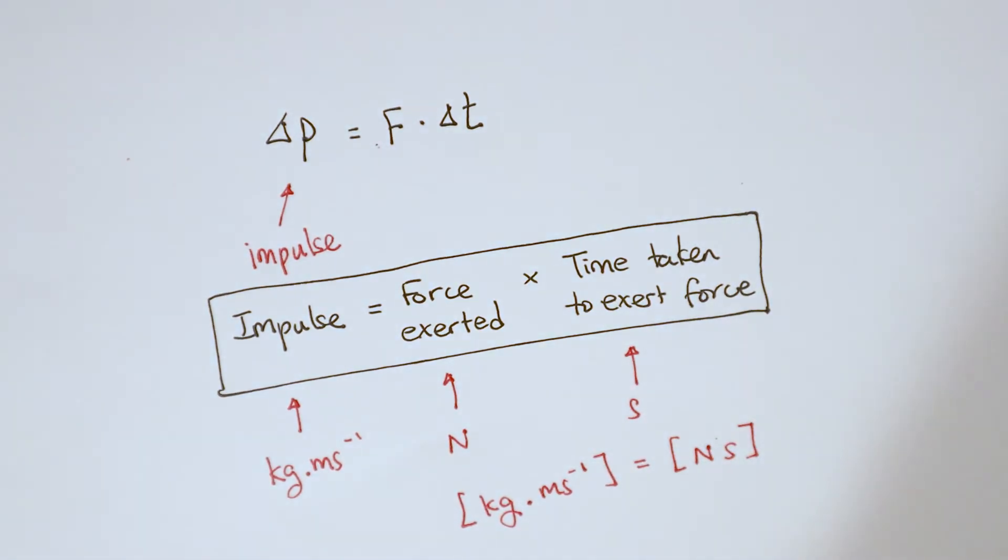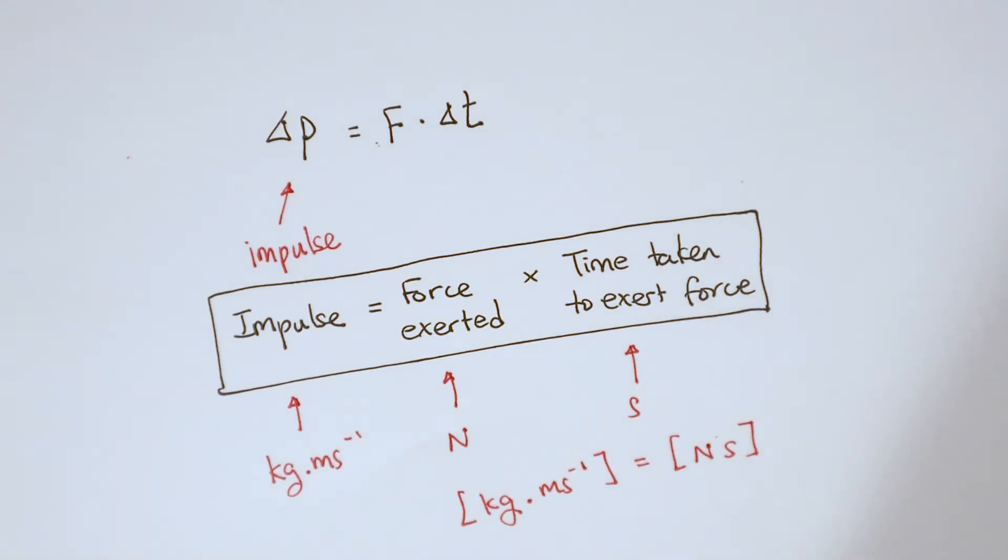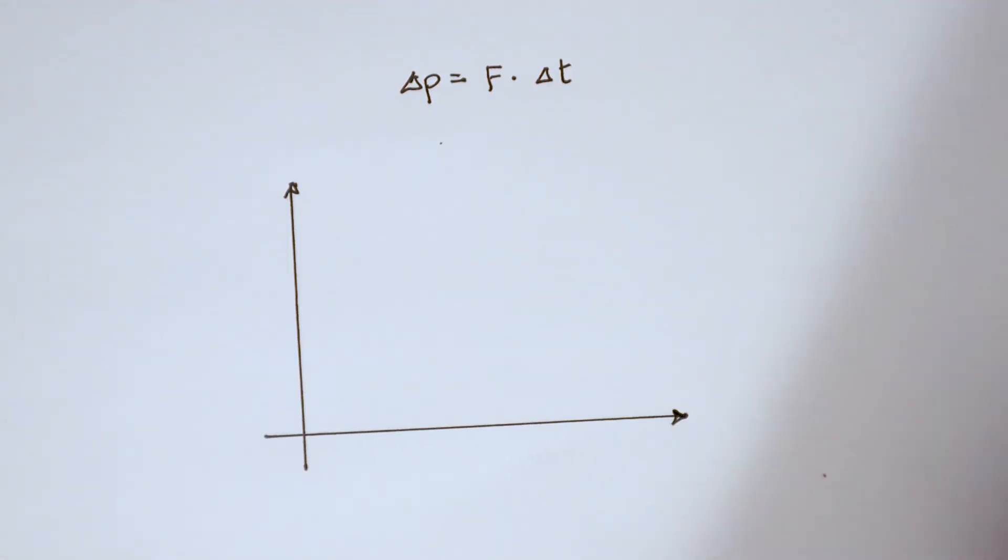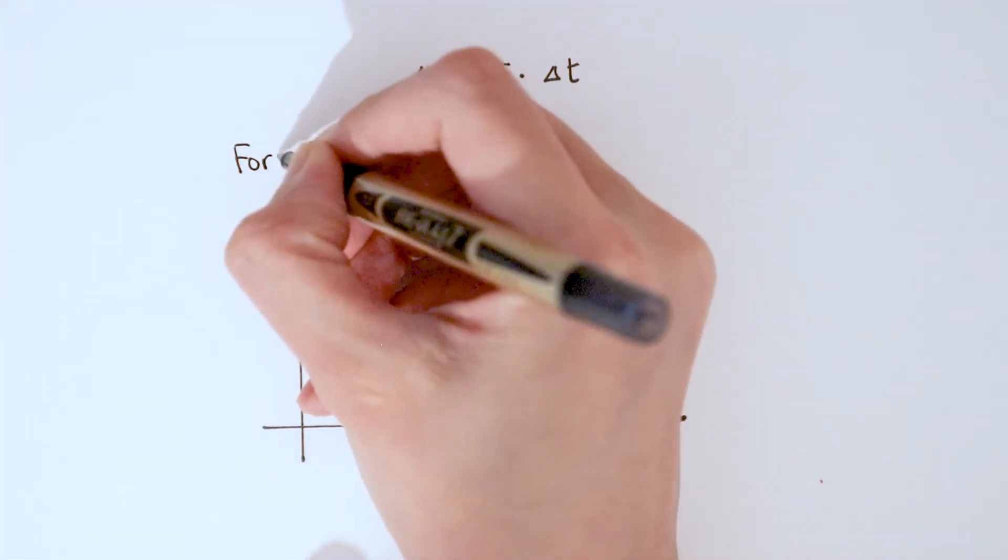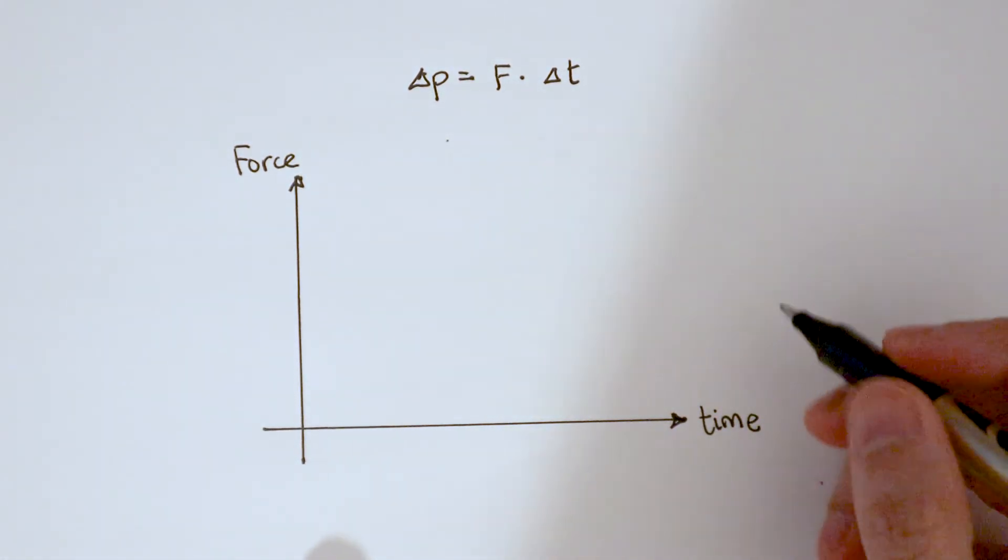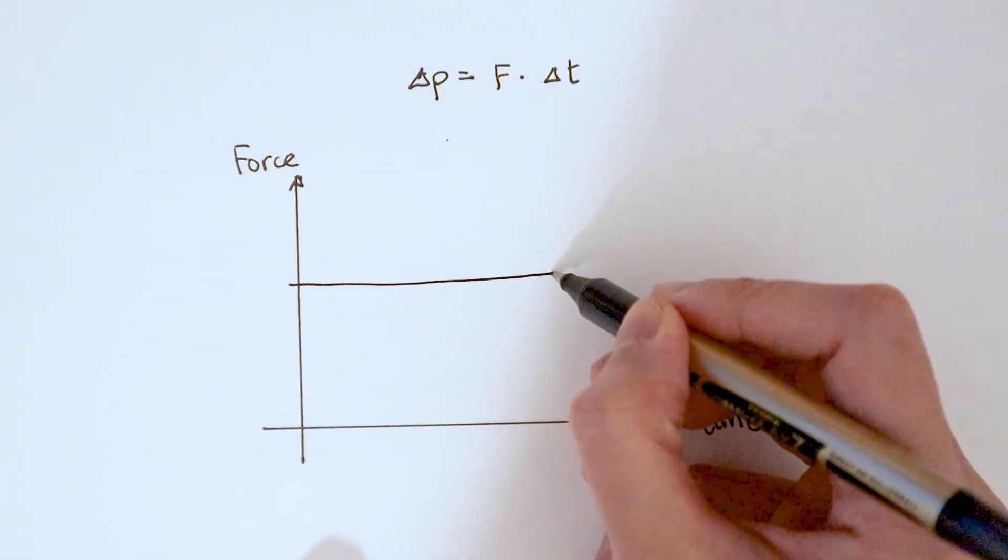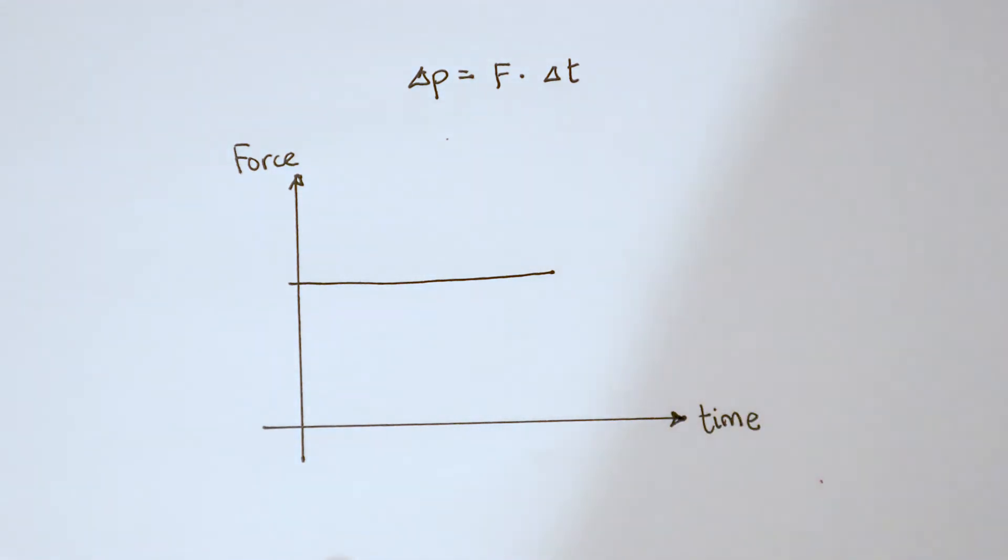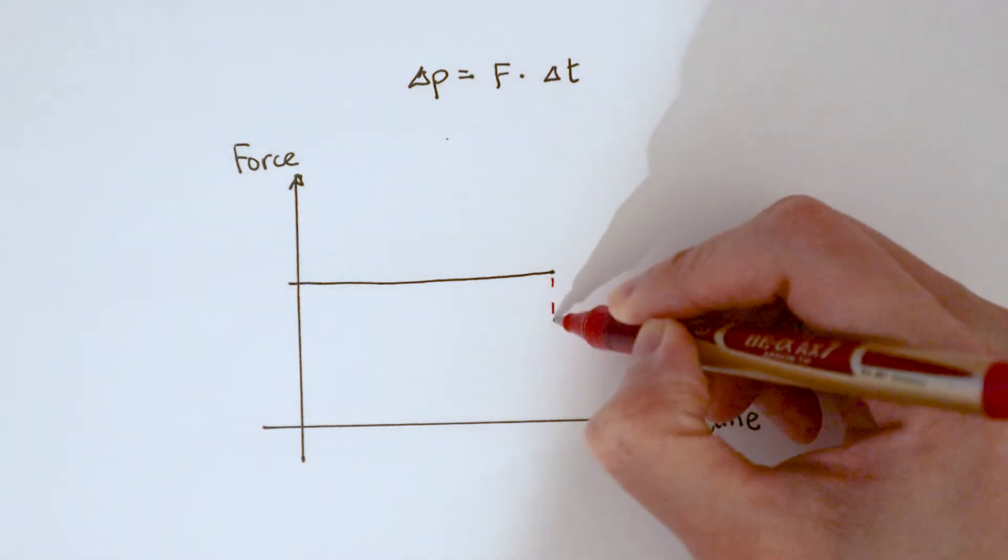Finally, we have to know how to extract information from a force time graph. Again, we'll refer back to the equation change in momentum is force times time. And in my graph, since I have force on the y-axis, time on the x-axis, if I find the area of the graph that is equivalent to force times time.